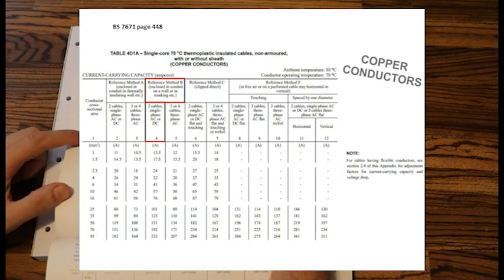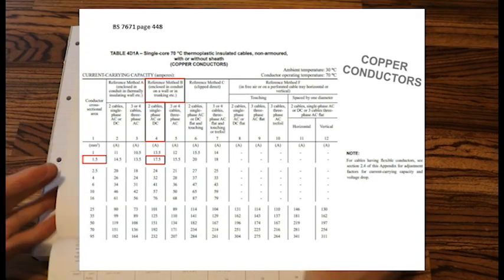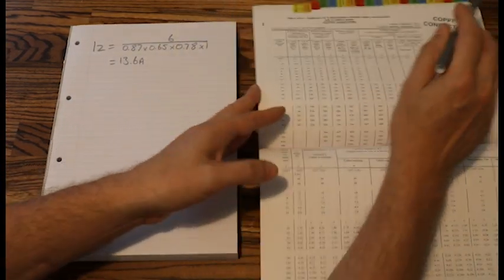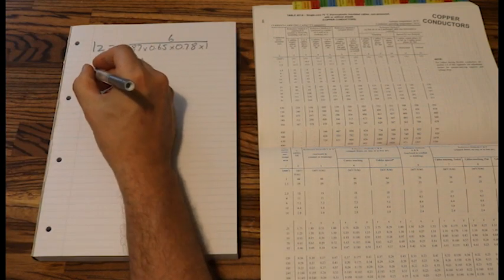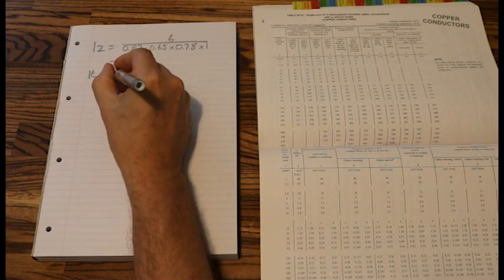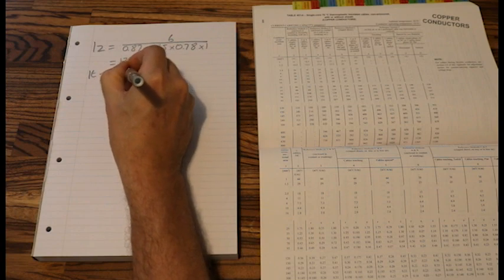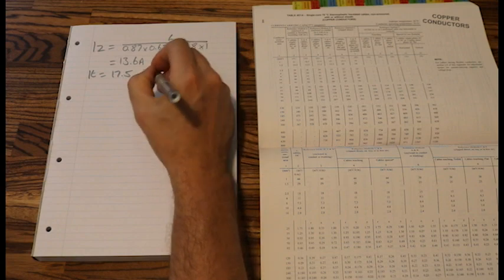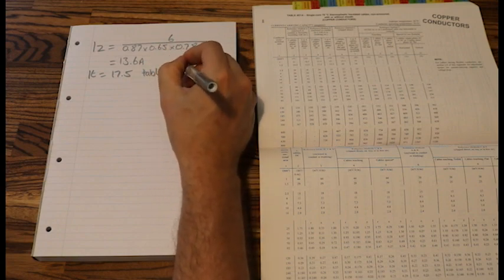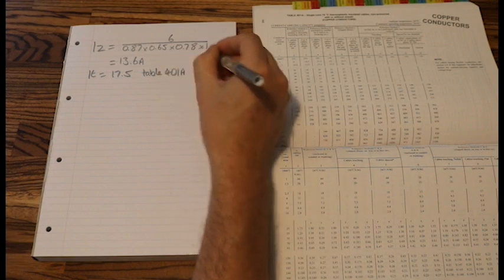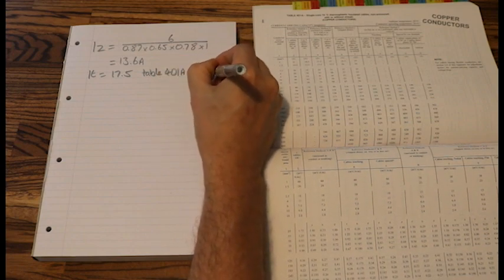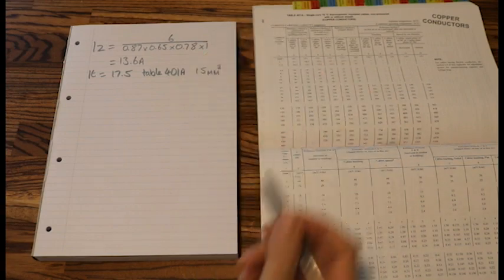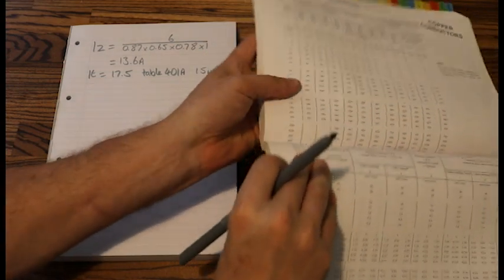1 mil cable is 13.5, that's too small, and the next one, 17.5 is the value that we want, and that is 1.5 mil cable. So if we write that down, so we have IT equals 17.5, reference to table 4D1A, and that was 1.5 mil cable.